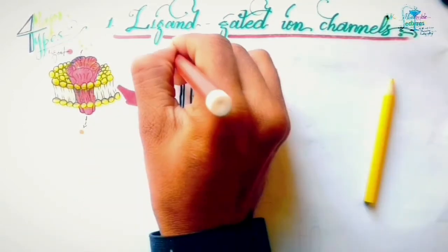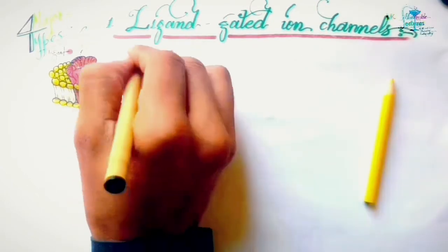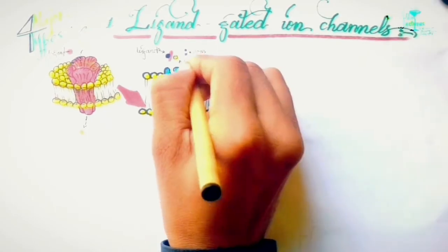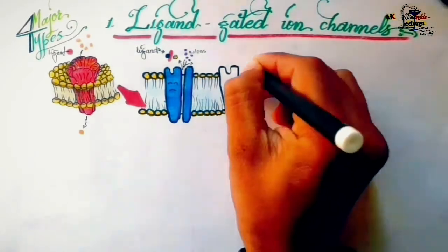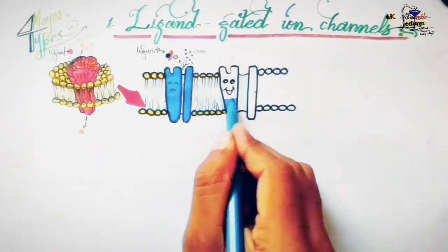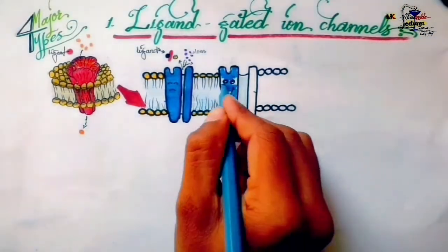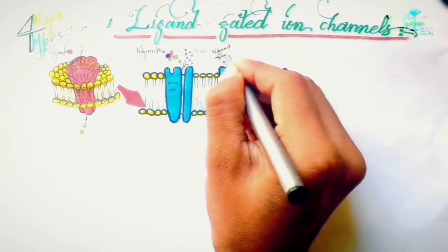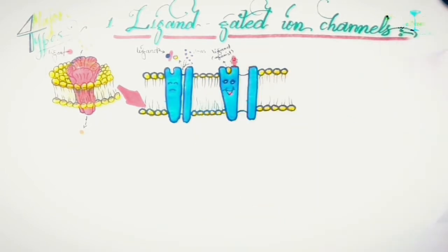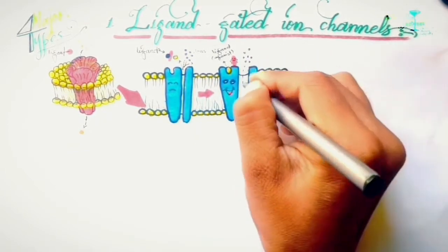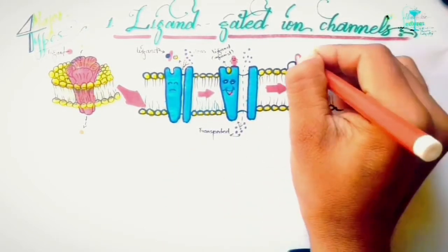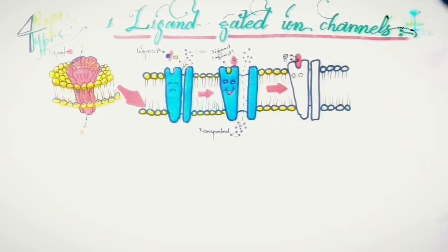In the absence of a ligand, the ion channels are closed and don't allow ions to be transported. Upon binding of a ligand to its receptor, a drug-receptor complex is formed and the ion channels undergo conformational changes, resulting in their opening, which allows ions to be transported across the cell membrane. Ligands that open ion channels are called agonists.